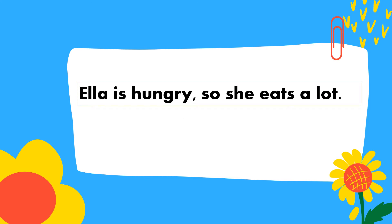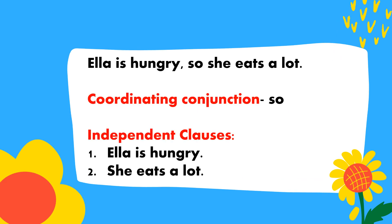Let's have an example: 'Ella is hungry, so she eats a lot.' This sentence is an example of a compound sentence. A compound sentence has a coordinating conjunction and independent clauses. The coordinating conjunction in the sentence is SO. The independent clauses are 'Ella is hungry' and 'she eats a lot.'